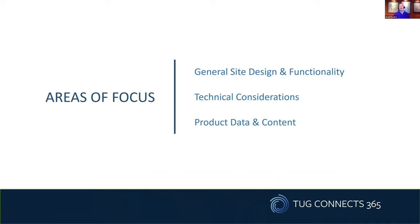I'm going to talk about three areas of focus today. The first is general site design and functionality — not from an artistic perspective, but navigation and functionality. Second, technical considerations: the speed of your site and mobile experience. Third, we'll wrap up with product data and content and the role that plays in providing a positive customer experience. Feel free to use the Q&A button or the chat window throughout.